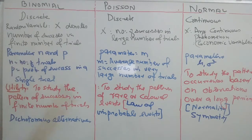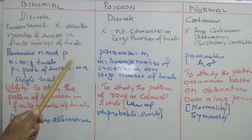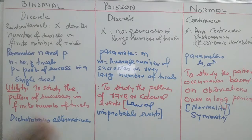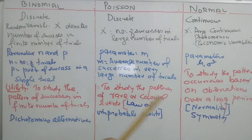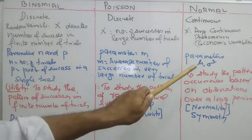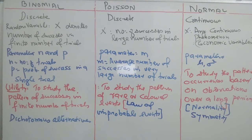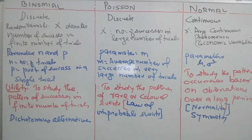In binomial distribution, we have two parameters: n (the number of trials, which is finite) and p (the probability of success in a single trial, known from past experience). The parameter of Poisson distribution is M, the average number of successes known from a very large number of trials. For normal distribution, the parameters are mu and sigma squared. So: binomial uses N and P, Poisson uses M, and normal uses mu and sigma squared.